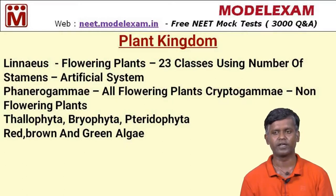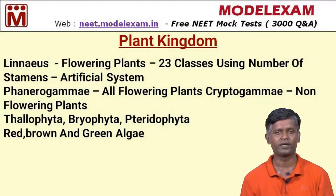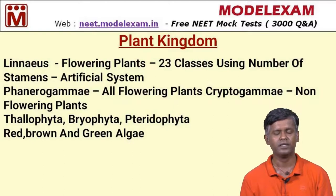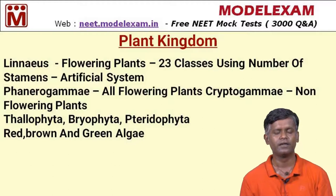In phanerogamy, all flowering plants are included. In cryptogamy, non-flowering plants are included, with three major classes: Thallophyta, Bryophyta, and Pteridophyta. In the Thallophyta community, they include red, brown, and green algae, which are given various colors because they produce red, brown, and green pigments present in phycobiliproteins.